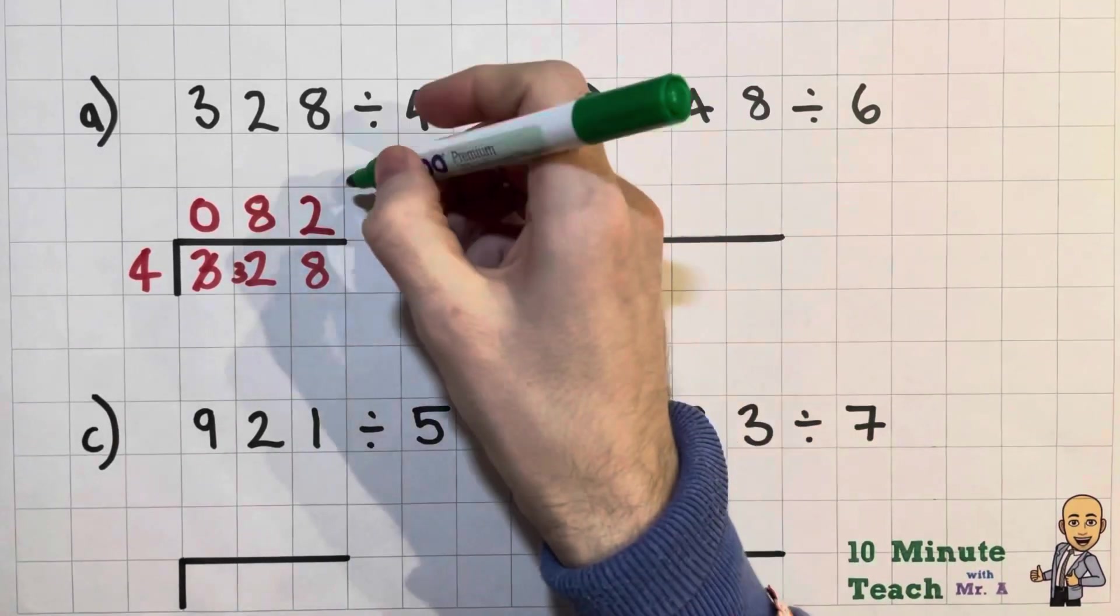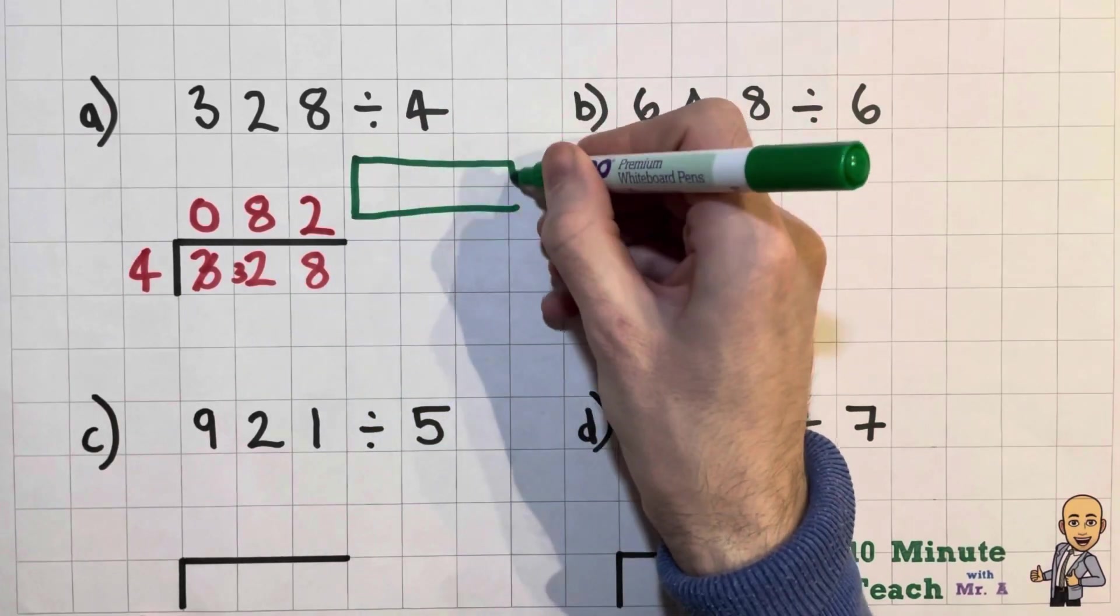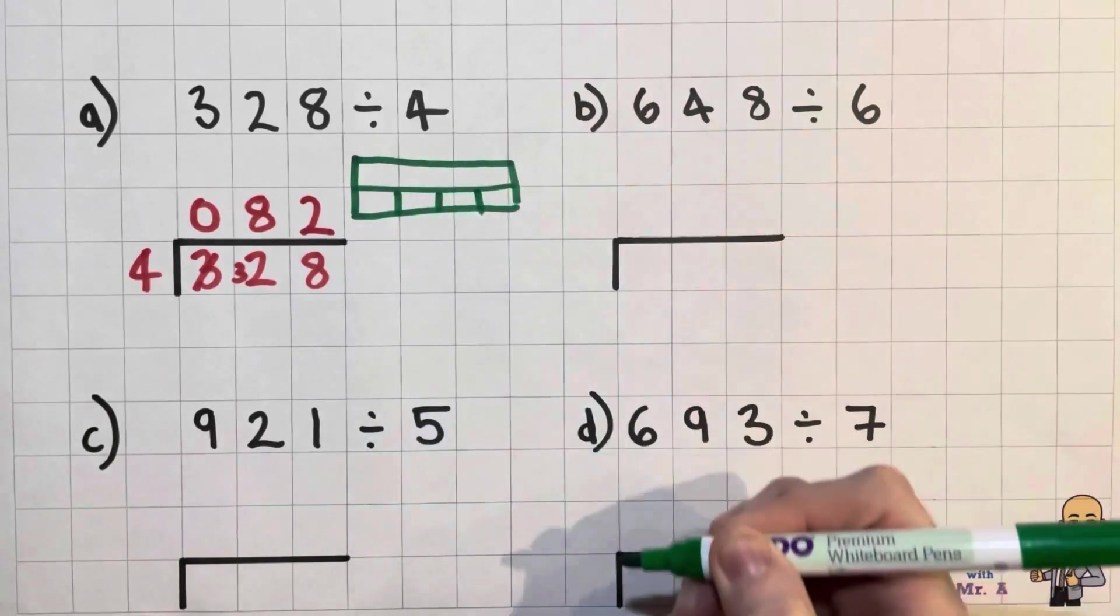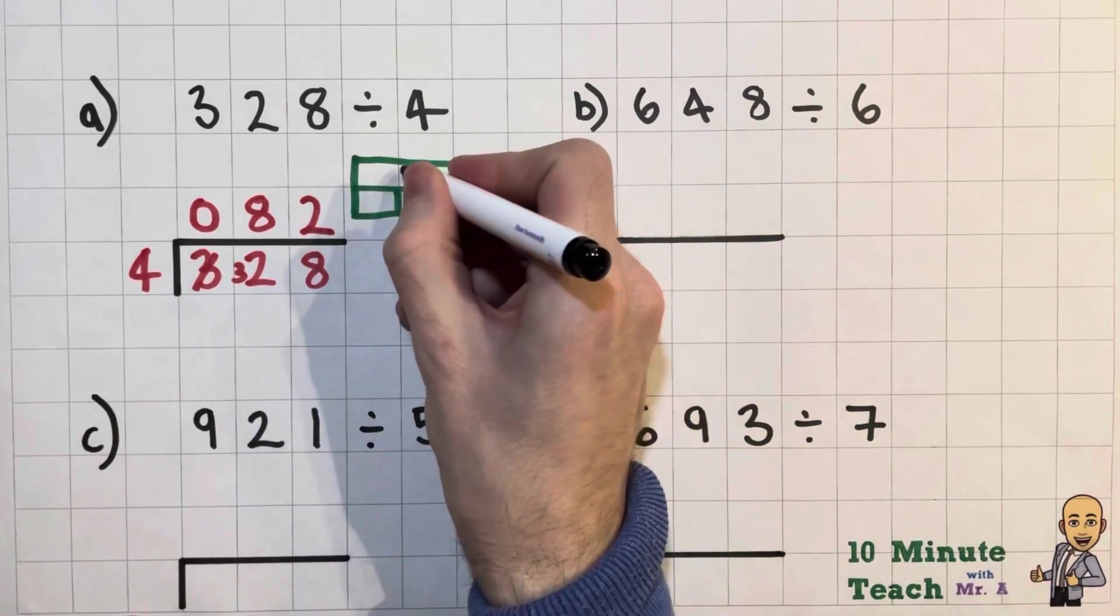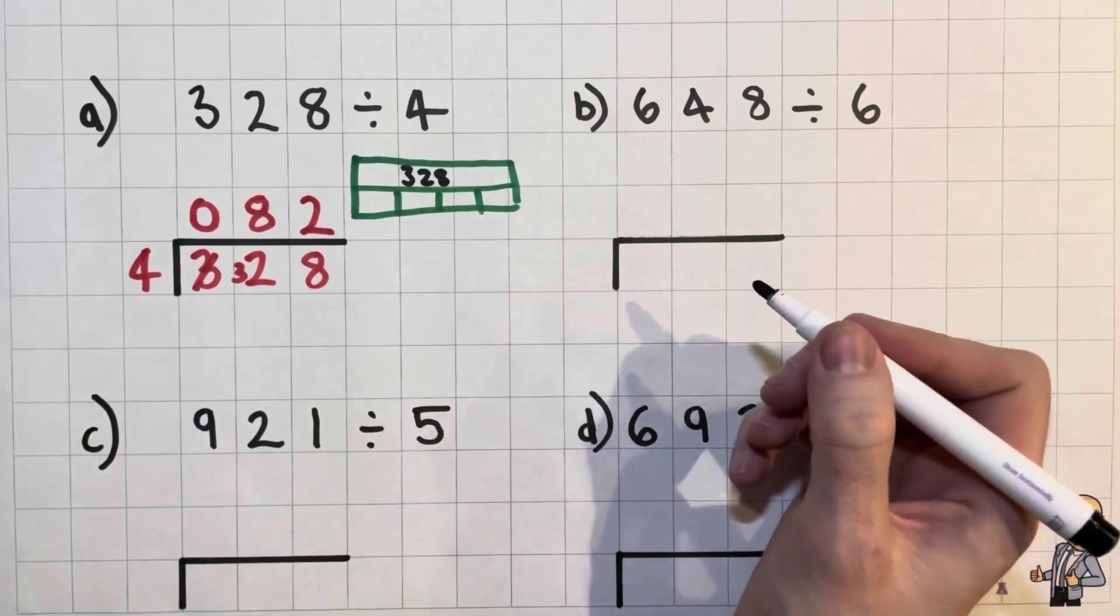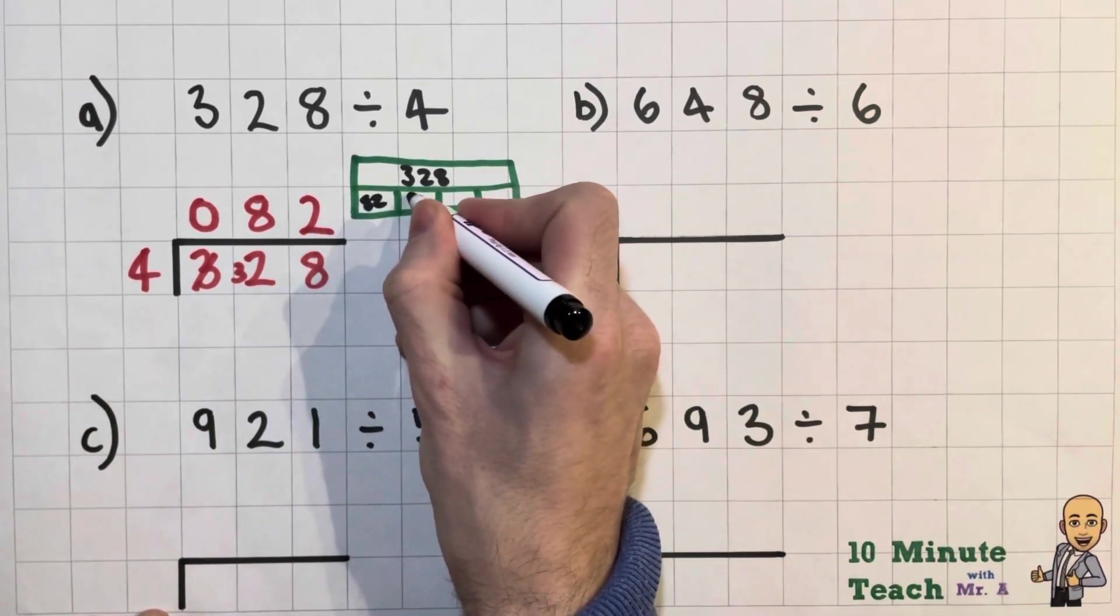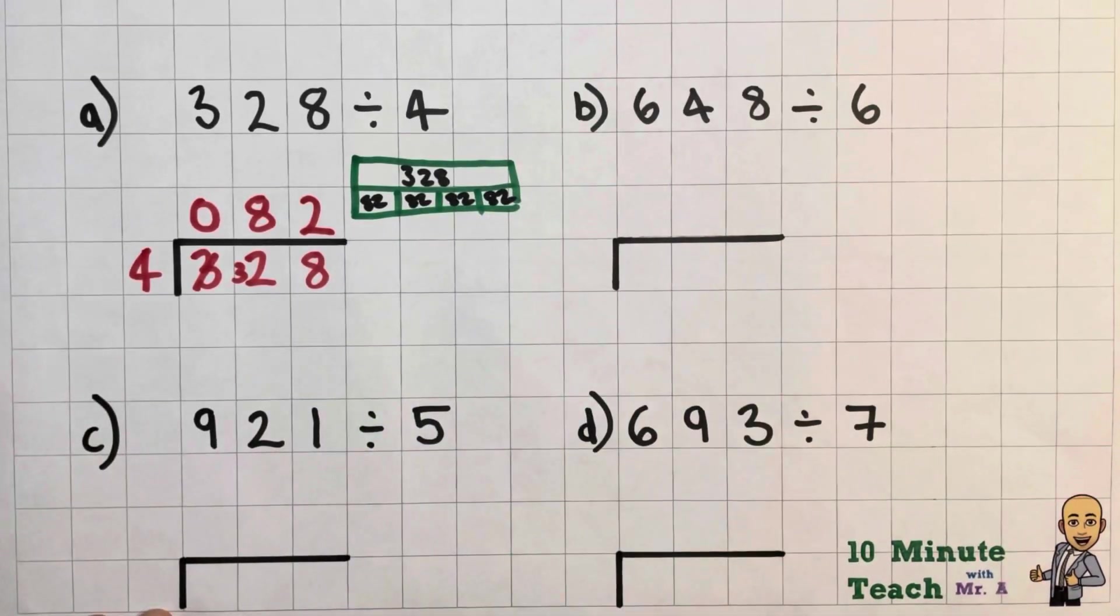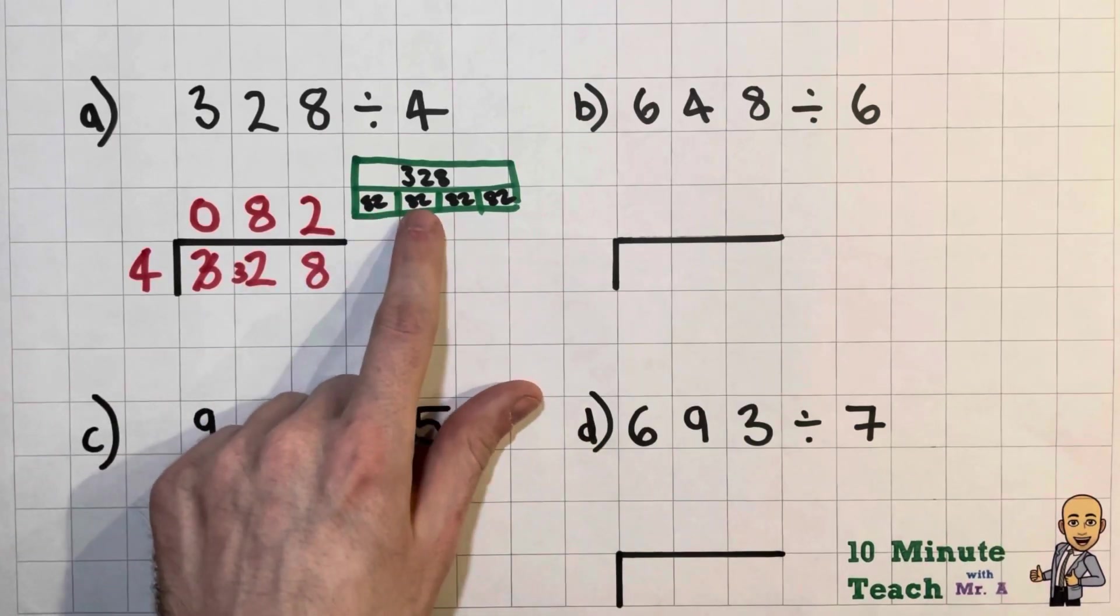So let's have a look at what that actually looks like in a bar model. So let's see, let's draw a very simple one just here for everybody at home, nice and easy. So I'm splitting it into four equal pieces. I have 328 that I'm dividing into our four equal pieces, and I have 82 in each one of those.